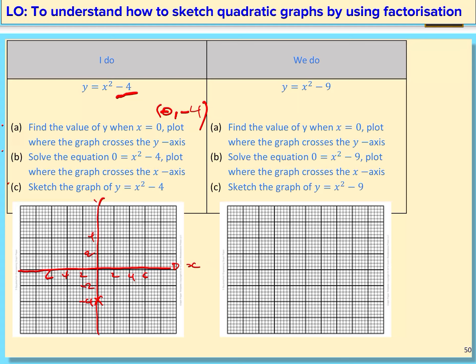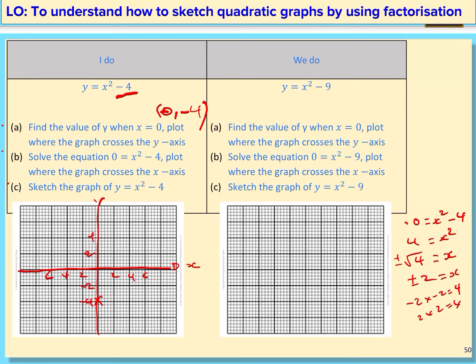Now we're going to solve 0 equals x squared minus 4. I'm going to add 4 to both sides, giving 4 equals x squared. Then I square root both sides to get x equals plus or minus the square root of 4. The reason it's plus or minus 2 is because negative 2 times negative 2 equals 4, and 2 times 2 equals 4 — so there are two possible values of x, either positive or negative 2.